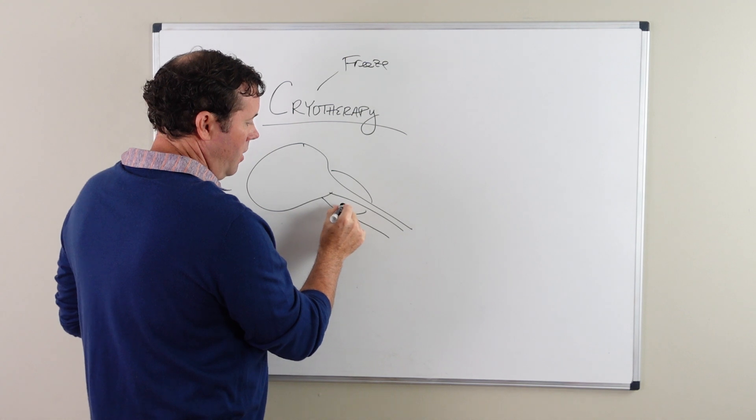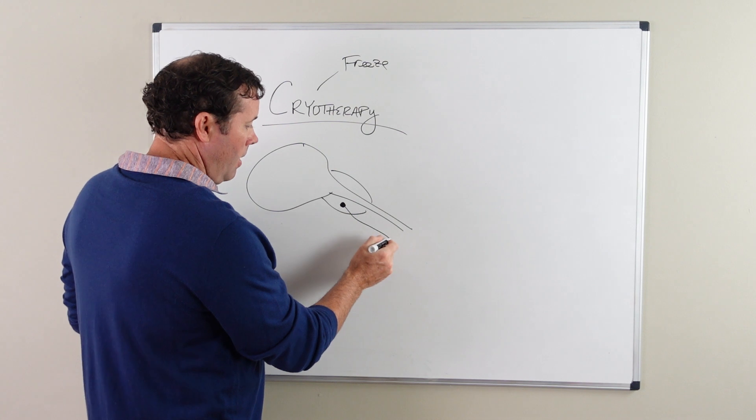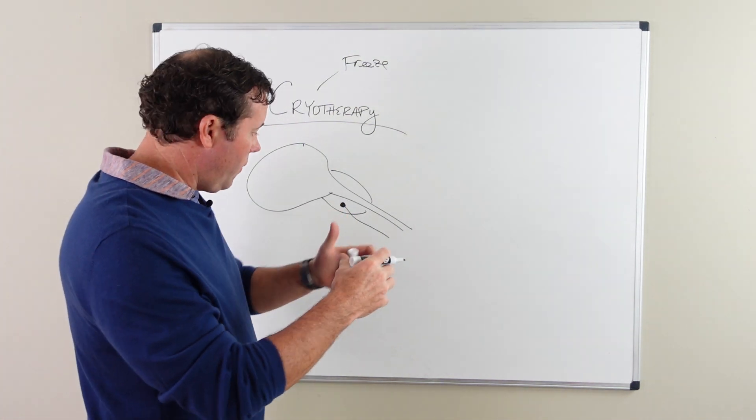There's an ice ball that forms at the tip of the needle. It's either argon gas or nitrogen gas typically. That freezes and with that freeze-thaw, freeze-thaw cycle.